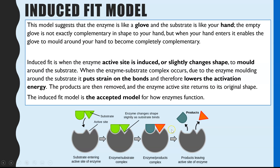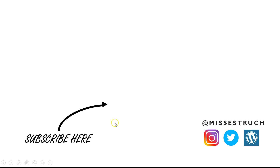The product is then released and the active site returns to its original shape. In the induced fit model, the active site is almost complementary to the substrate, but slightly changes shape when they collide so it moulds around the substrate, putting tension on the substrate's bonds, making them easier to break and lowering the activation energy. The products are released and the enzyme can be reused. This is the accepted model for how enzymes function — the active site does slightly change shape to mould around the substrate.